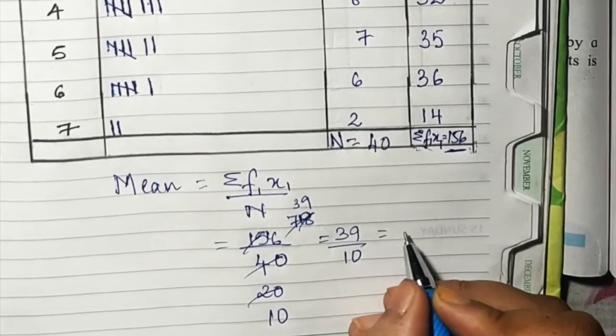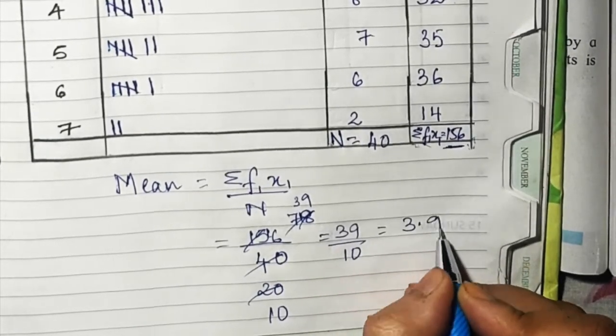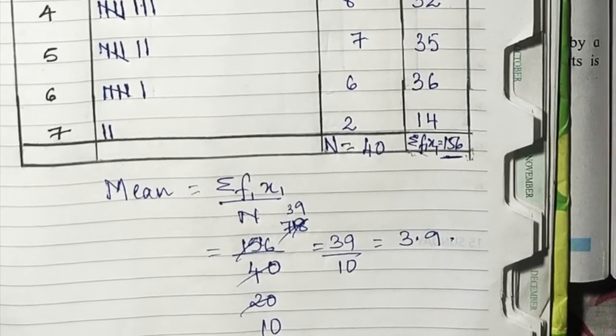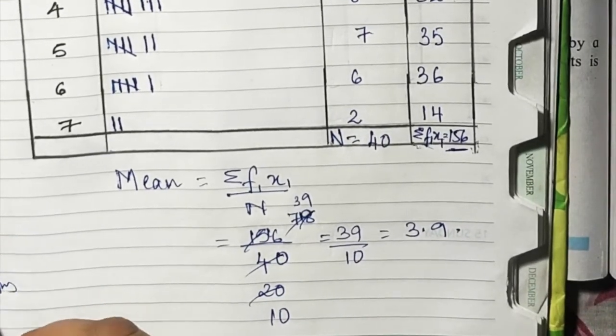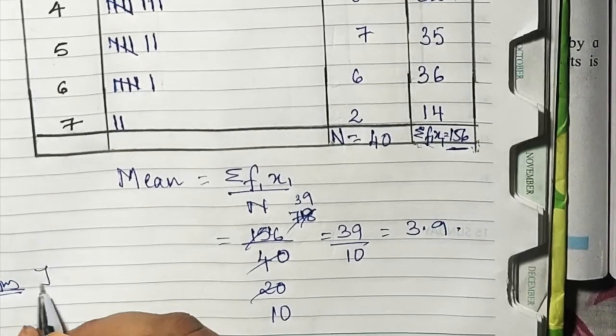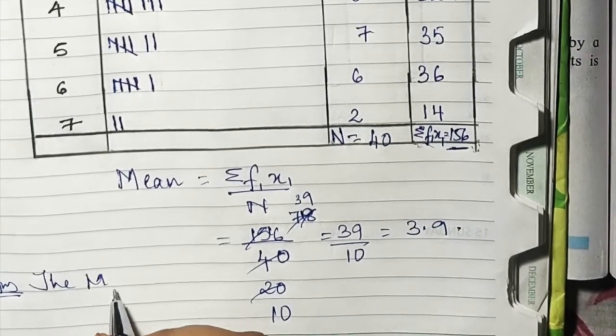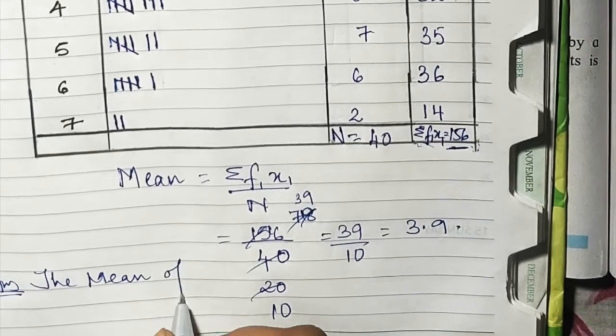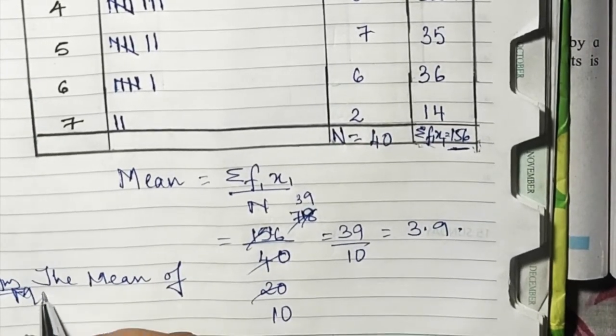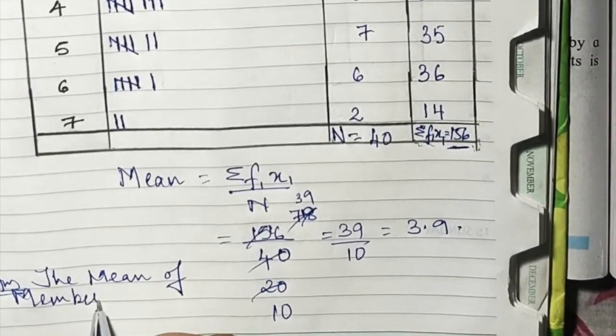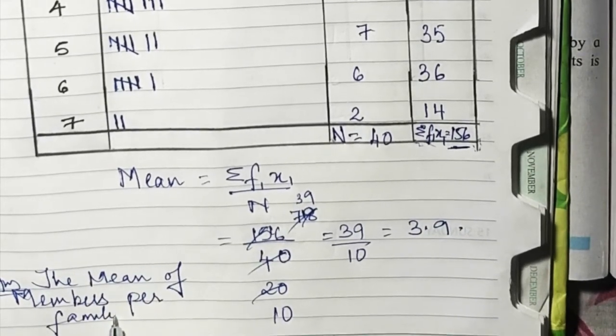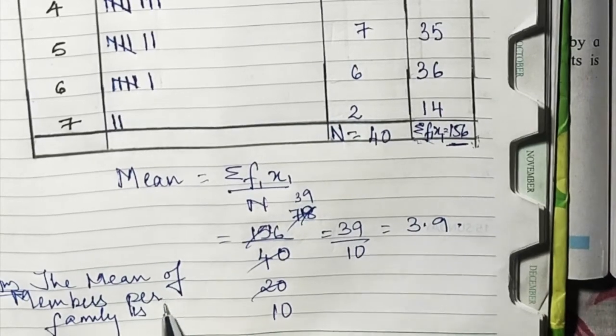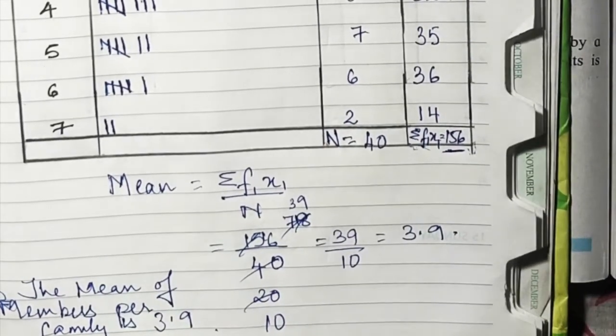That is 3.9. So the mean number of members per family is 3.9. That's it.